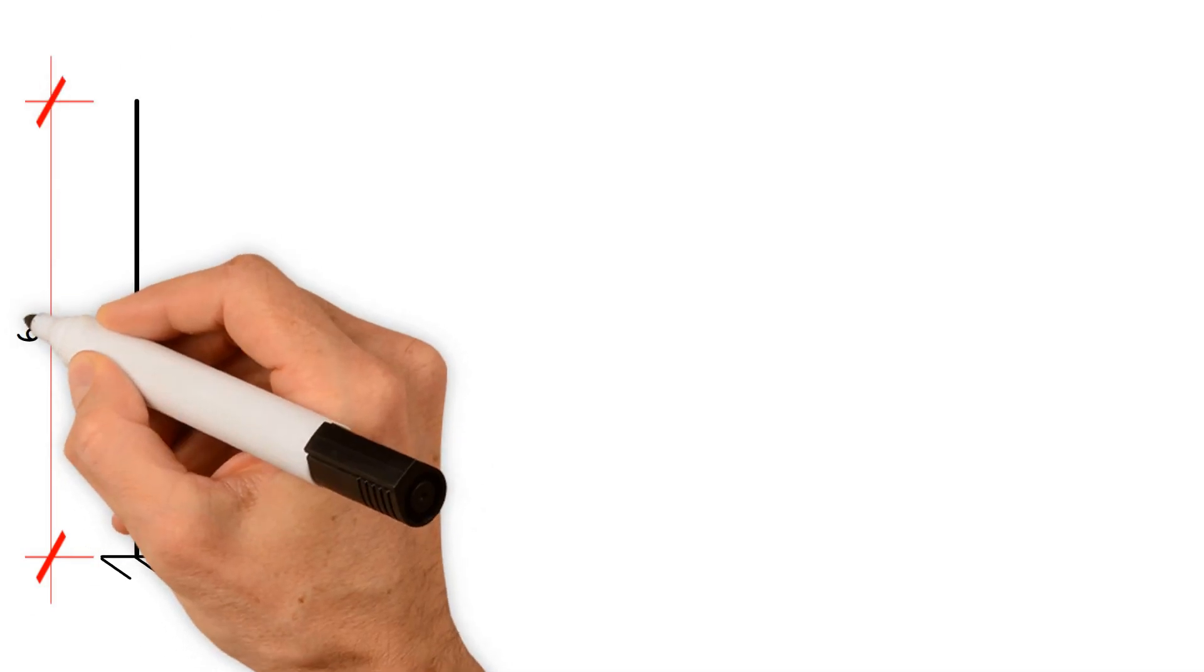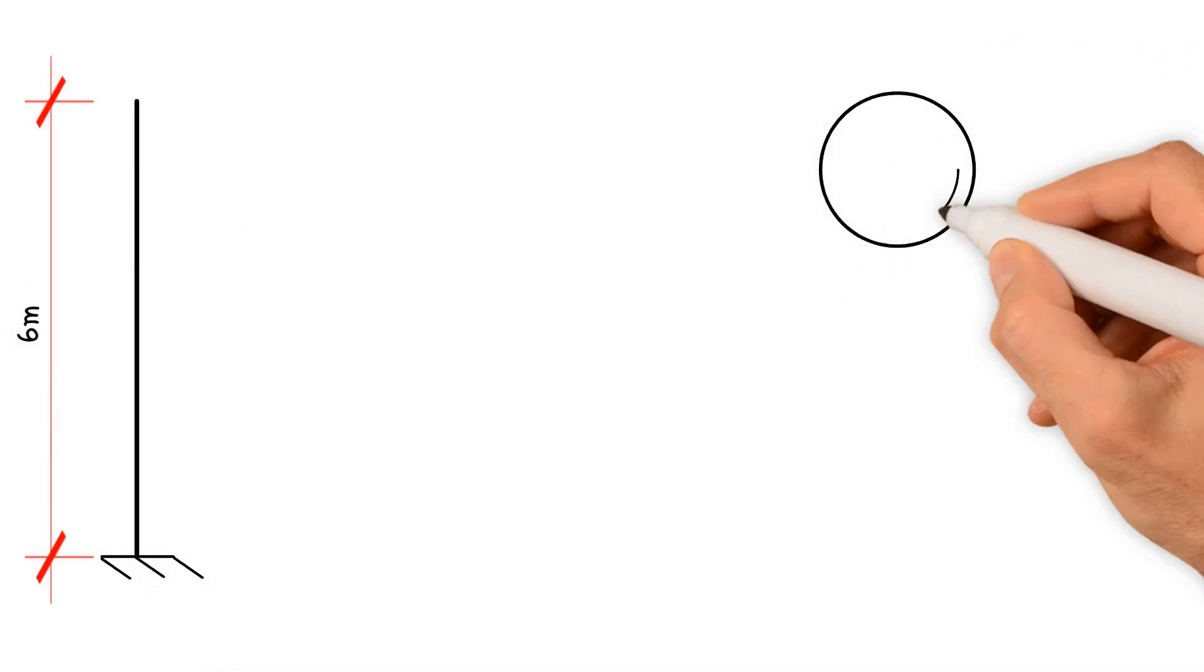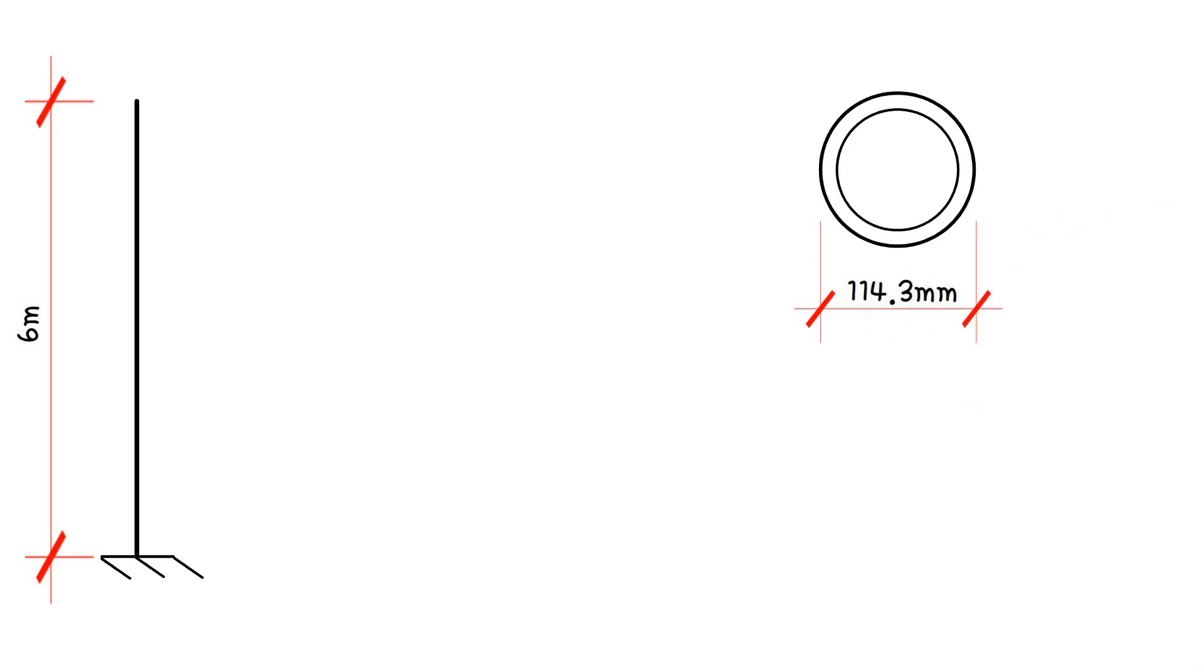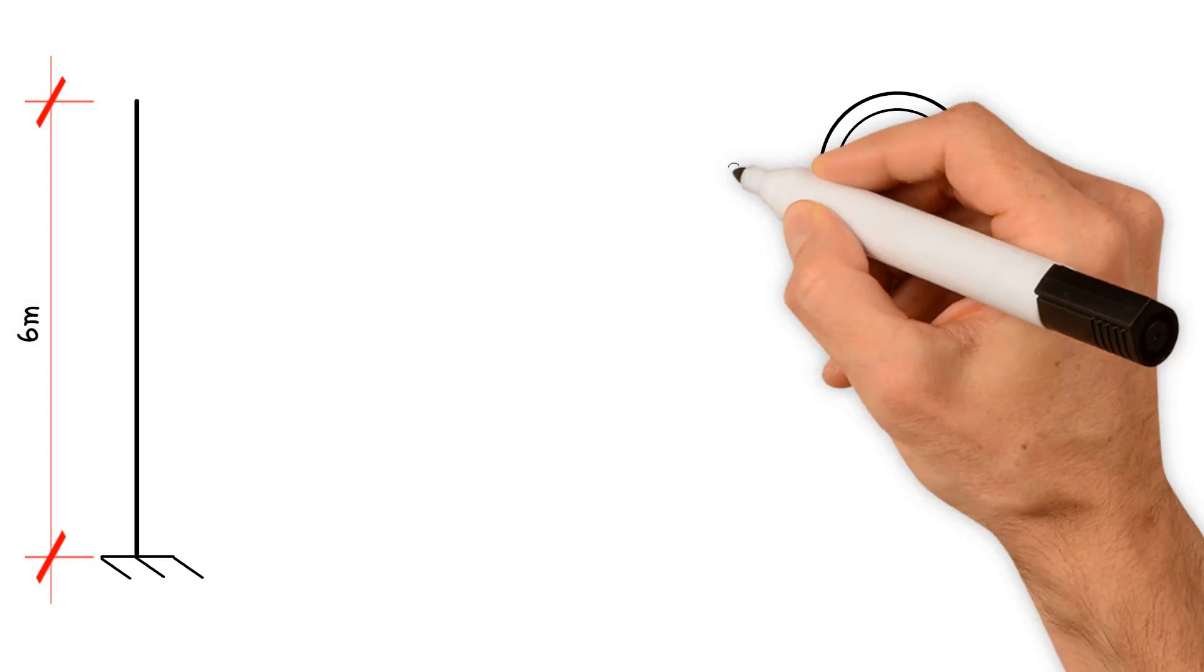A steel flagpole is 6 meters high and is made from circular hollow section with an outside diameter of 114.3 millimeters and a thickness of 3.0 millimeters.